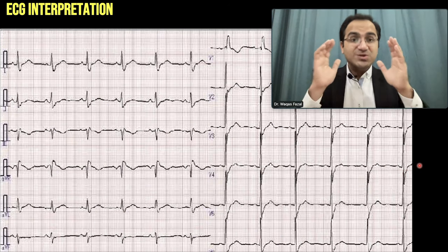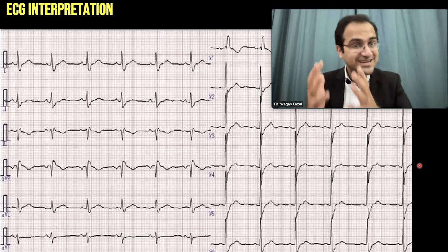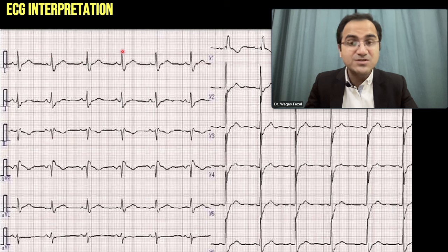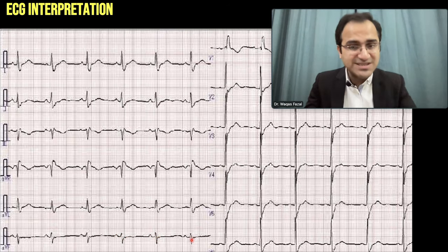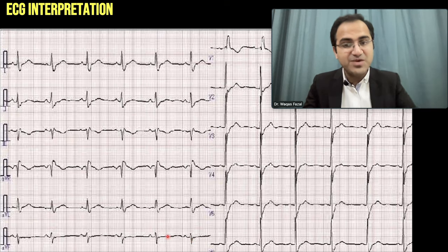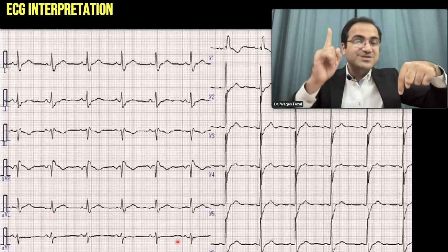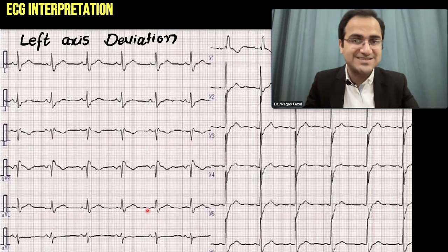Pause the video and solve this ECG — find whether it is normal, right axis, or left axis deviation. Coming to the answer: Lead I is predominantly positively deflected — pointing upward. Lead aVF is predominantly deflecting downward; although there is some upward deflection, the predominant part is downward. So Lead aVF is pointing downward and Lead I is pointing upward — they are leaving each other. 'Left Leaves' — this is left axis deviation.